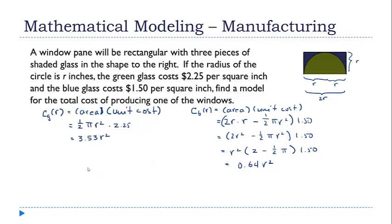So the function that I'm looking for, the function for the total cost, is the cost of the green part plus the cost of the blue part. So that's 3.53r squared plus 0.64r squared. And if you add those two together, you come up with 4.17r squared. So that's my final function. The cost of producing a window of radius r is equal to 4.17 times r squared. That's my model for the cost of this manufacturing situation.